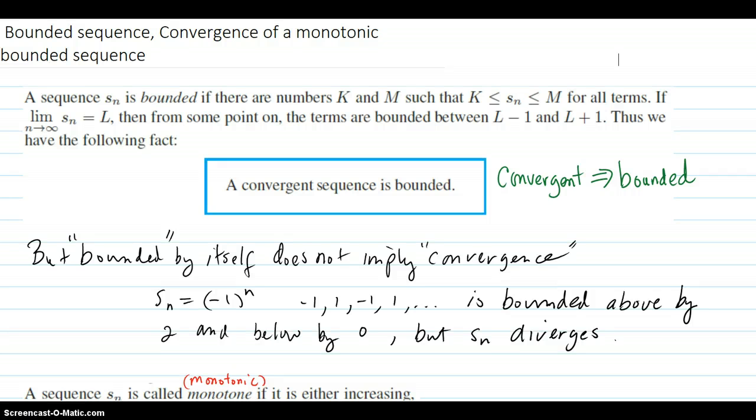Let's talk about what it means for a sequence to be bounded, and then how monotonic and bounded sequences end up being convergent. So a sequence is bounded if there are numbers for which the sequence terms travel only between those two numbers, so bounded by the two numbers.